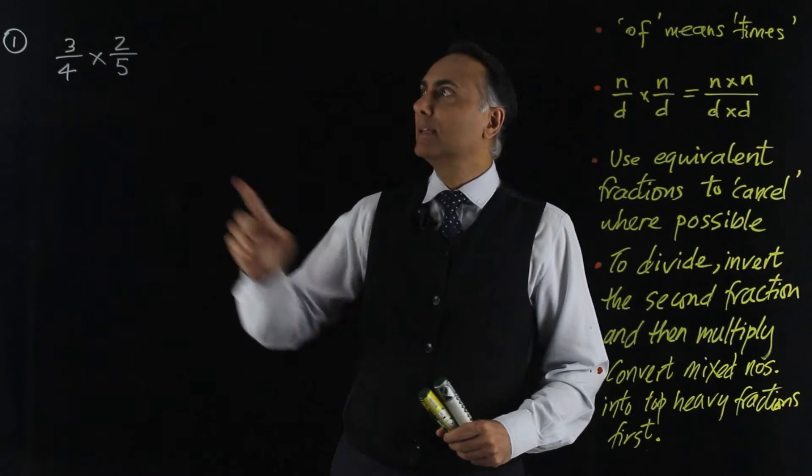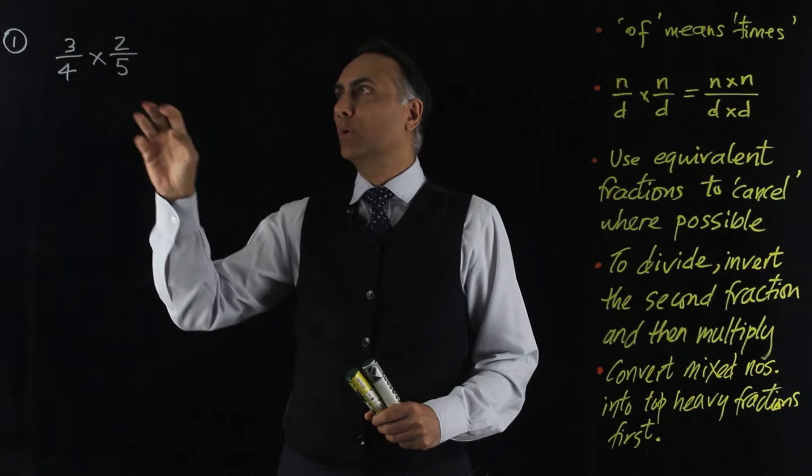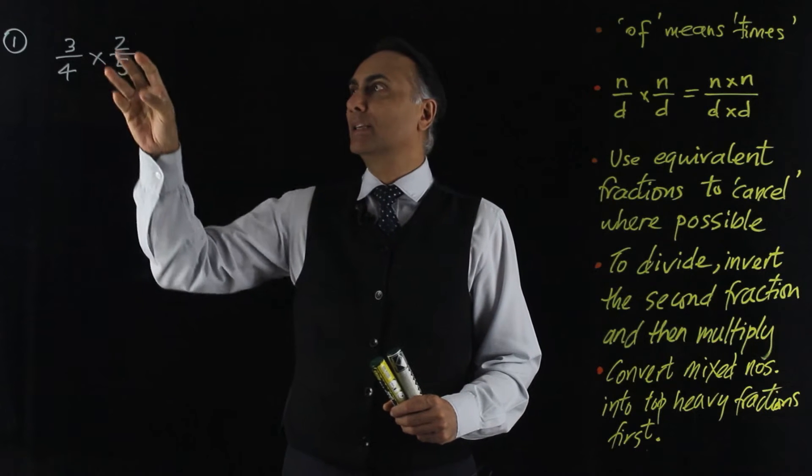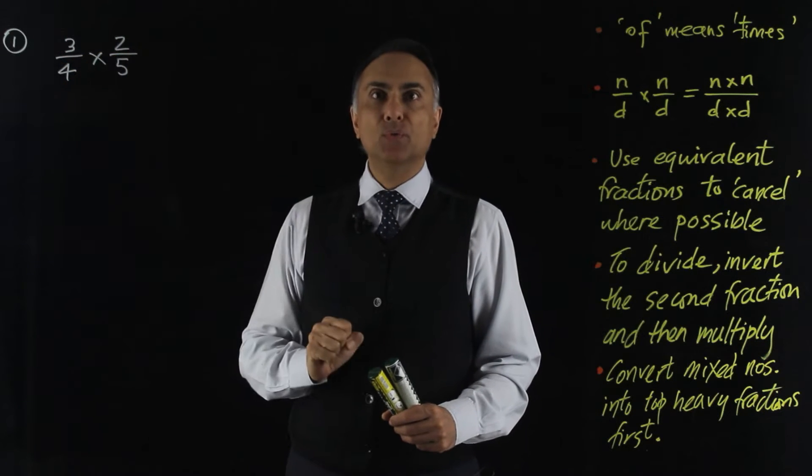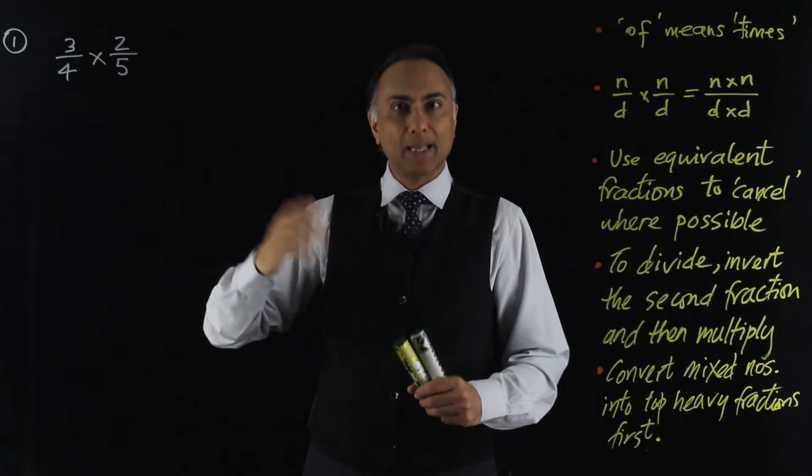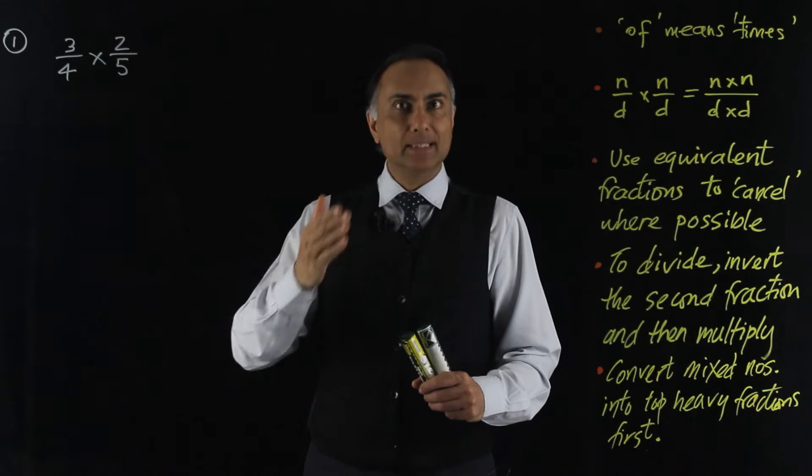Let's take this one as an example, three quarters times two fifths. Now, you can read this as three quarters of two fifths or two fifths of three quarters. In mathematics, of means times.